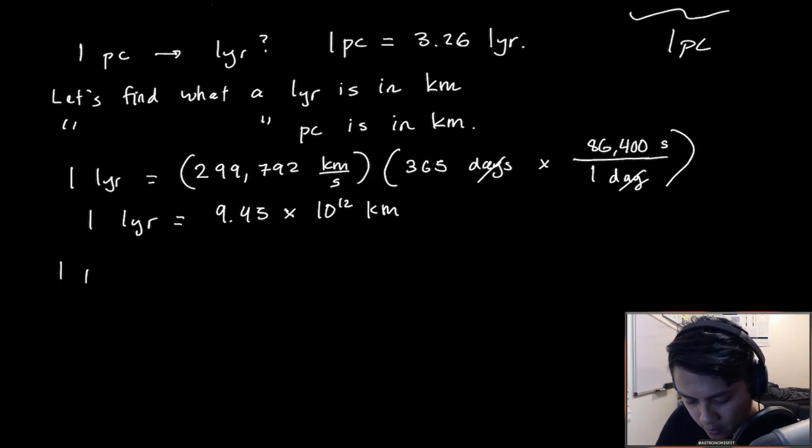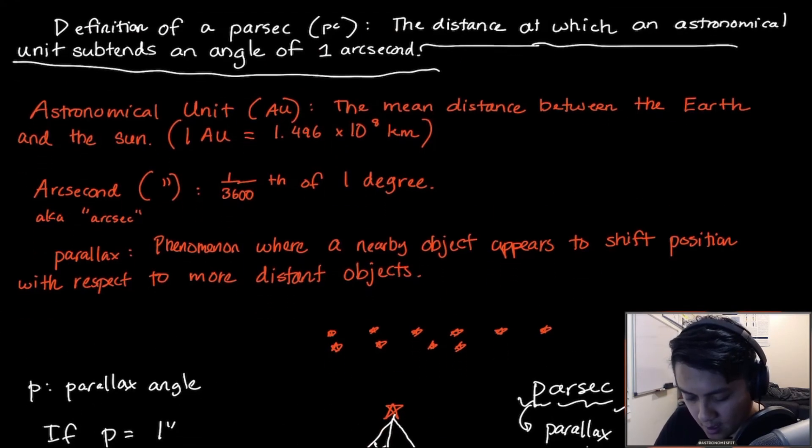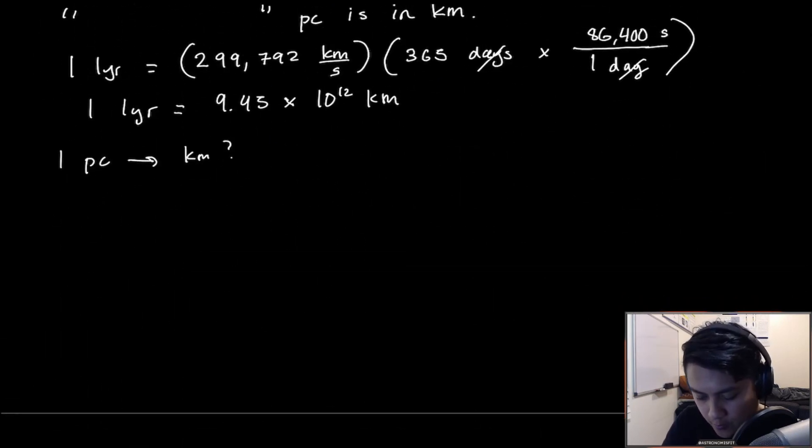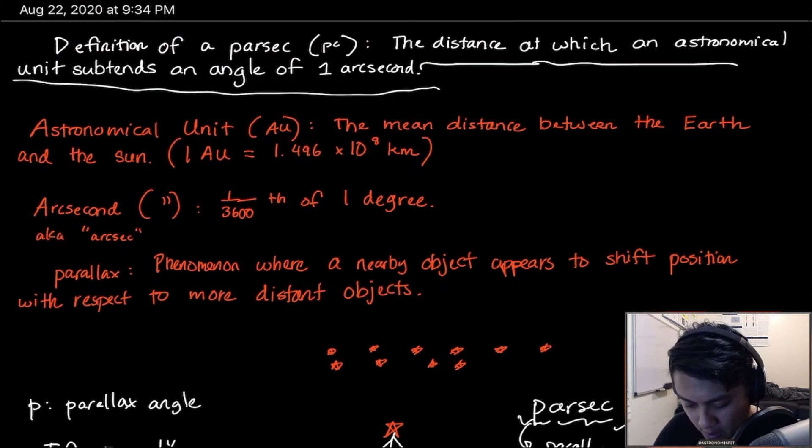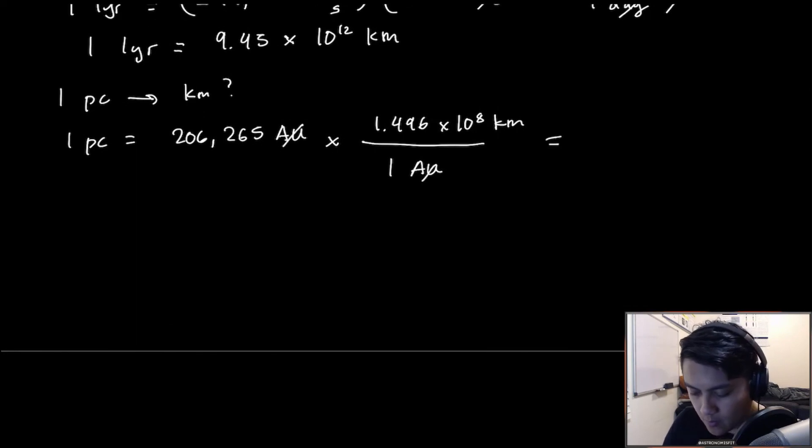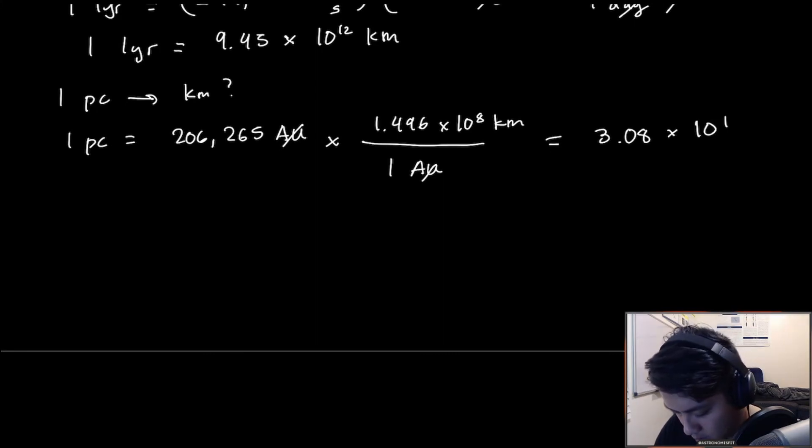What about a parsec? One parsec in kilometers. We know that an AU is 1.496 times 10 to the 8 kilometers, and we figured out there are 206,265 AUs in a parsec. So 1 parsec equals 206,265 astronomical units times 1.496 times 10 to the 8 kilometers per AU. This gives us 3.08 times 10 to the 13 kilometers.